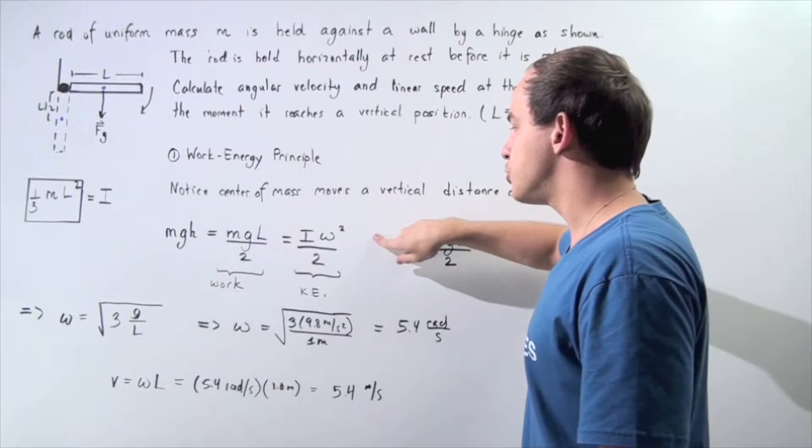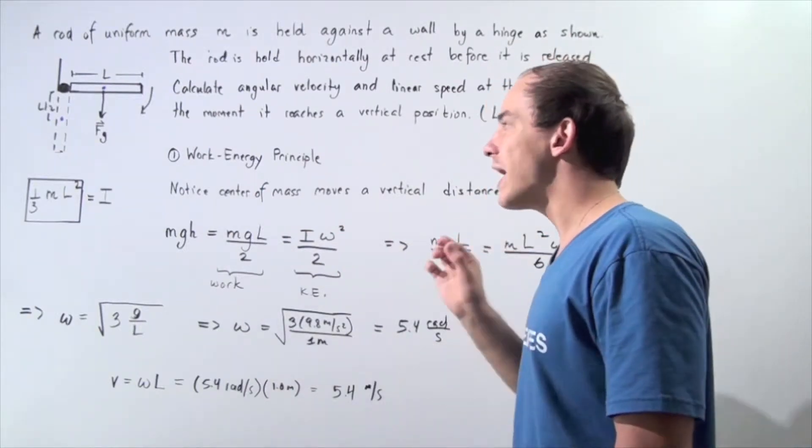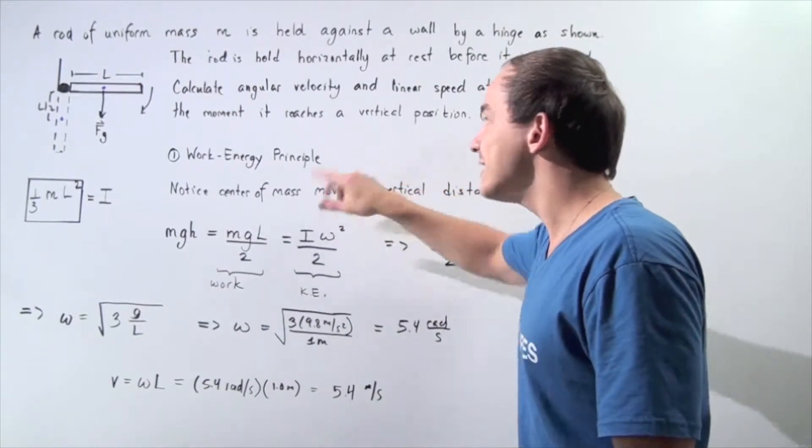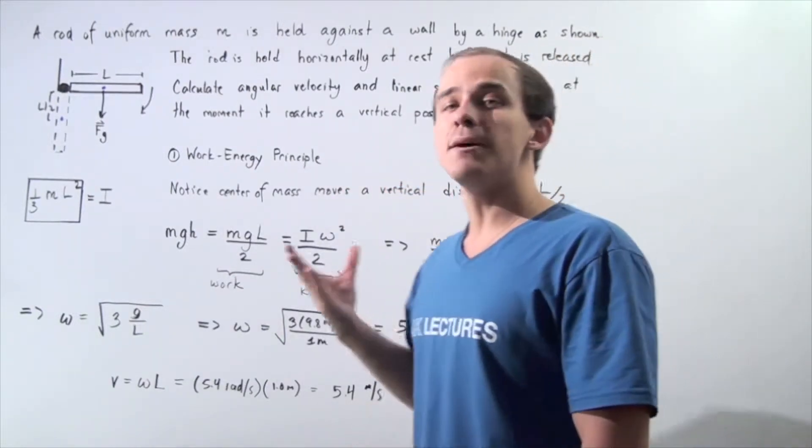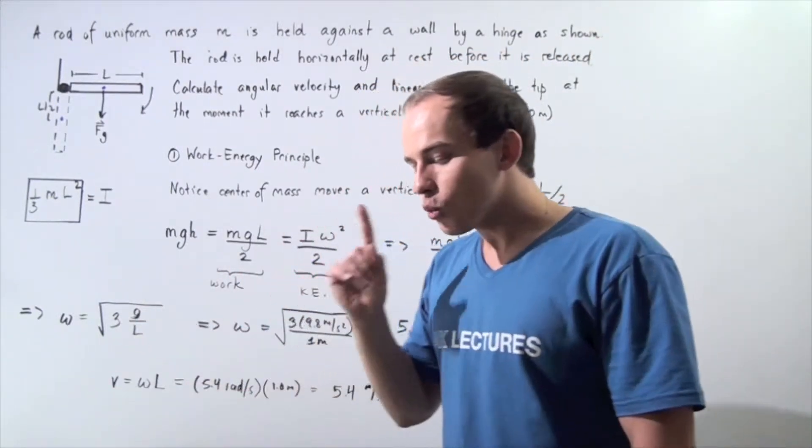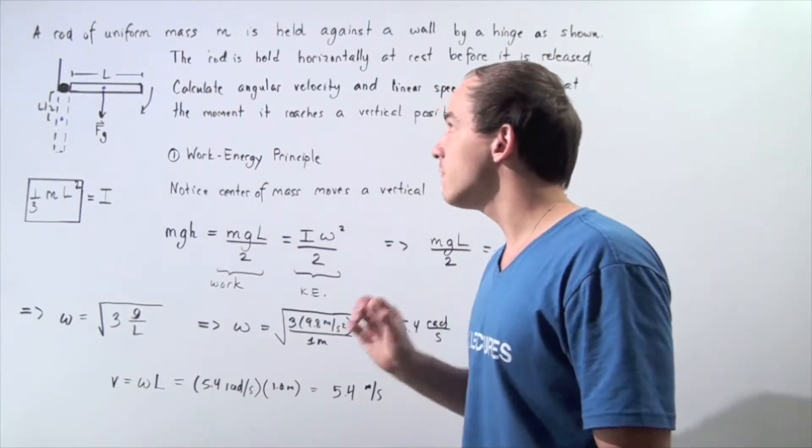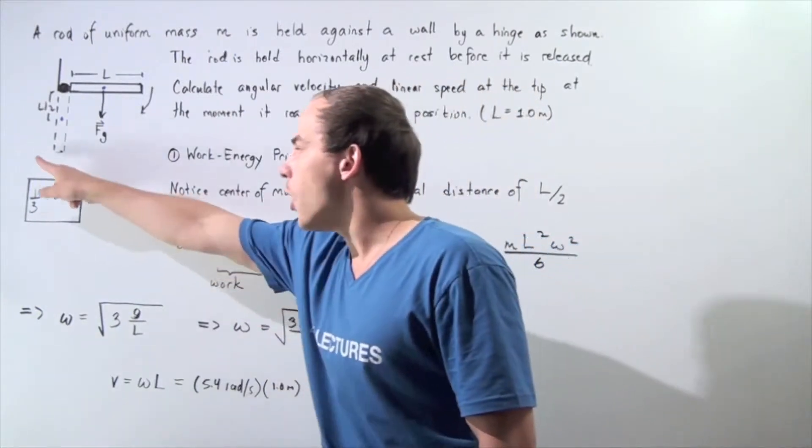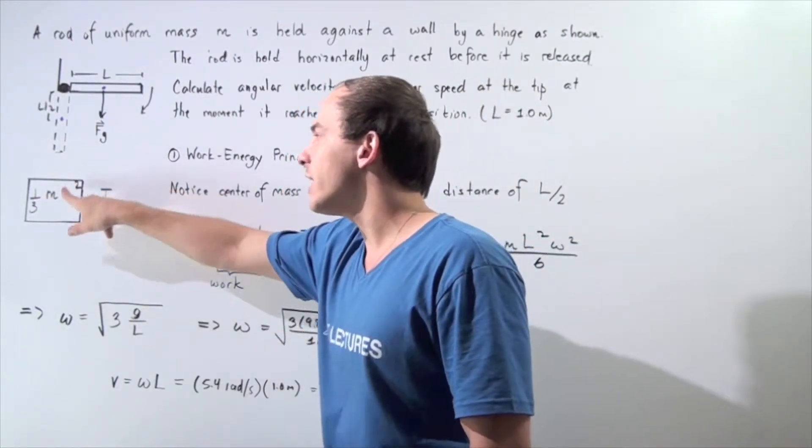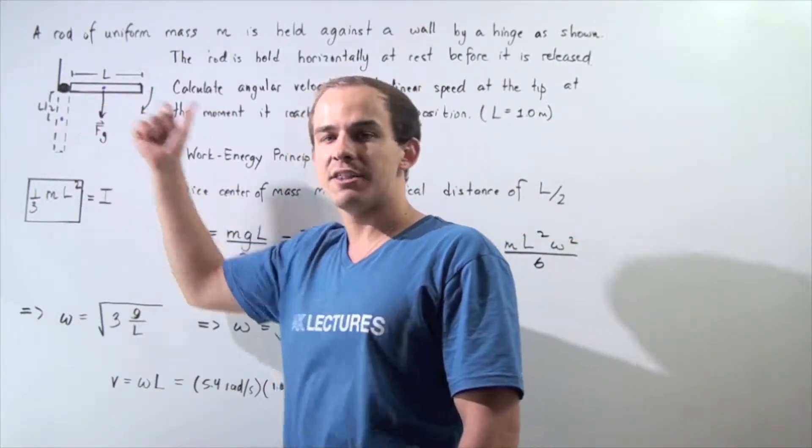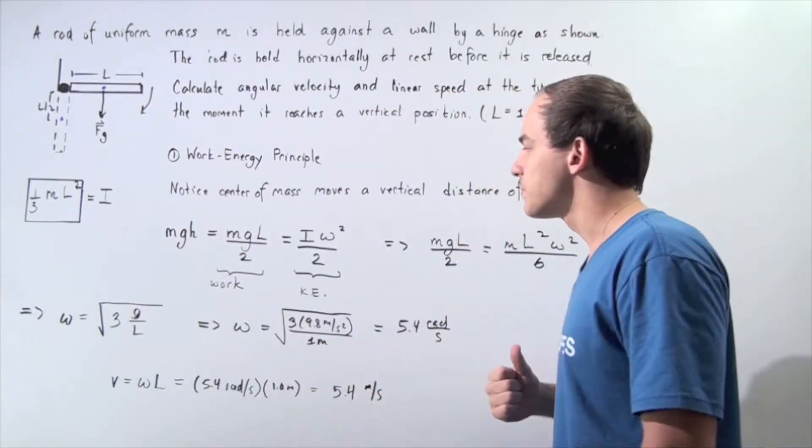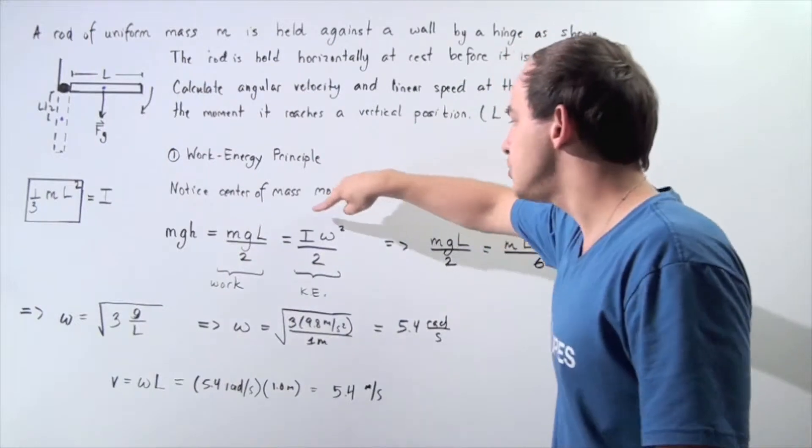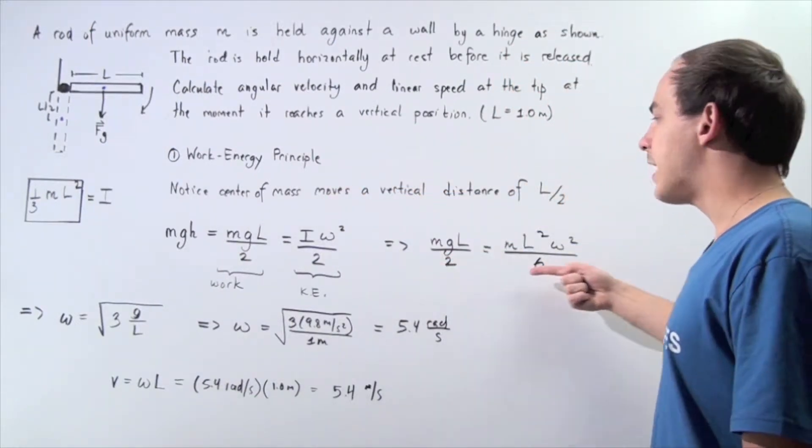Where omega is our angular velocity that we're looking for, the I is the moment of inertia. Recall the moment of inertia of a uniform mass M is given by 1 third ML squared, where L is simply our entire length of the rod. We simply plug in this entire equation into I, and we get the following result.